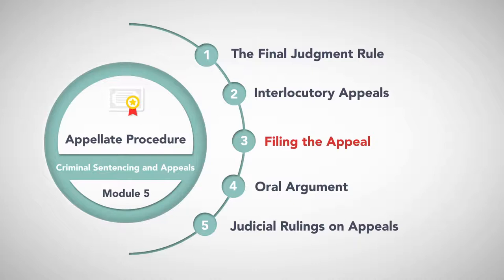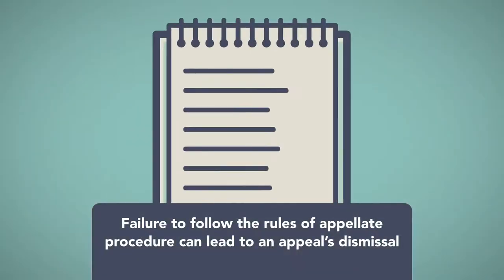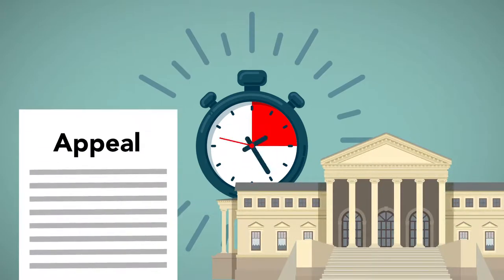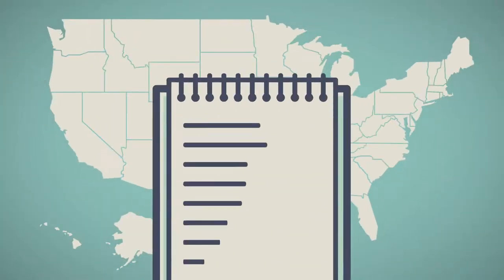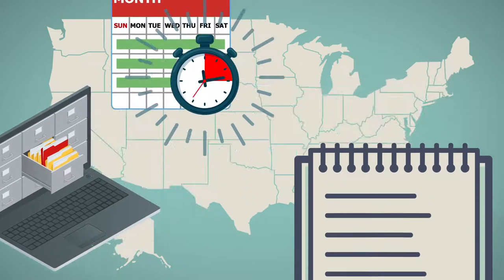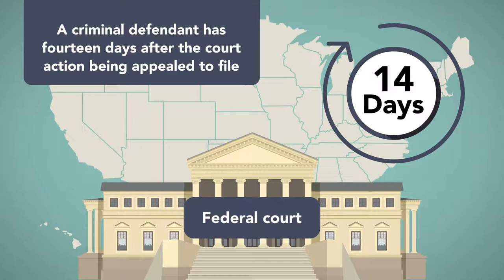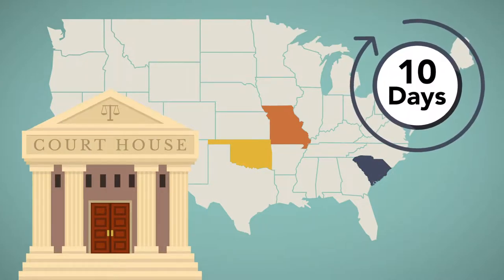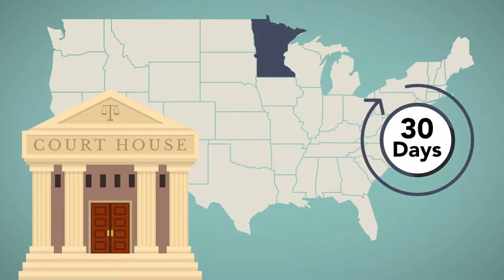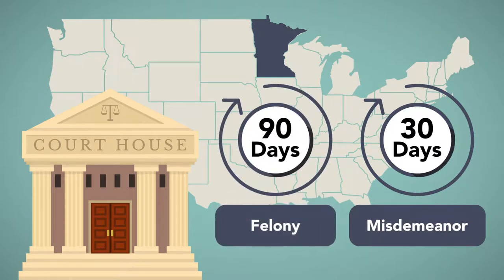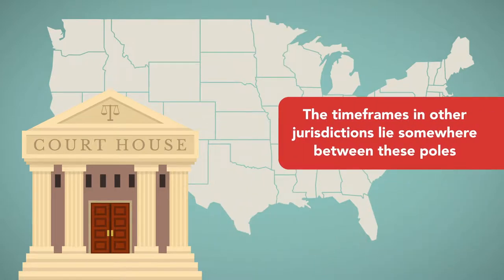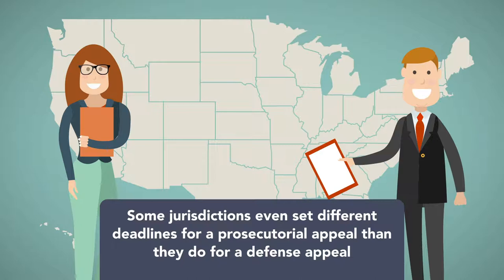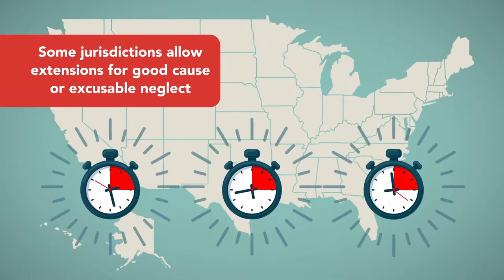Filing the Appeal. Even if a right to appeal exists, failure to follow the rules of appellate procedure can lead to an appeal's dismissal. An appeal must be filed on time with the correct court and in the correct format. Each jurisdiction has its own rules that dictate appellate filing deadlines. In federal court, a criminal defendant has 14 days after the court action being appealed to file. Criminal defendants in Missouri, Oklahoma, and South Carolina state courts only have 10 days. Minnesota allows defendants 30 days in misdemeanor cases and up to 90 days in felony cases. Some jurisdictions set different deadlines for a prosecutorial appeal than for a defense appeal, and some allow extensions for good cause or excusable neglect.